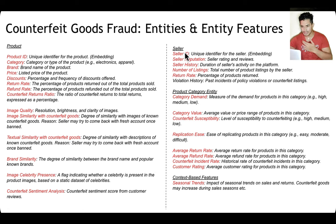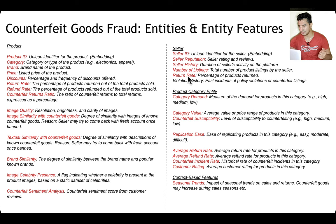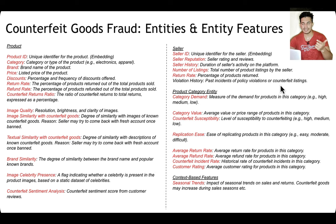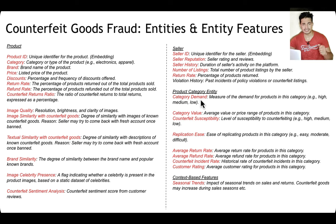Seller entity features include: seller ID (as an embedding), seller reputation, seller rating and reviews, seller history (duration of activity on the platform), number of listings (total products listed by the seller), return rate (percentage of products returned), and violation history — past incidents of policy violations or counterfeit listings by the seller. If a seller has done this in the past, they may do it in the future as well.